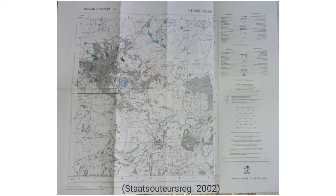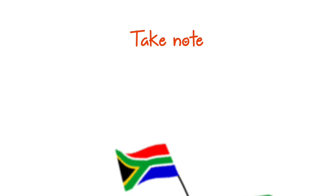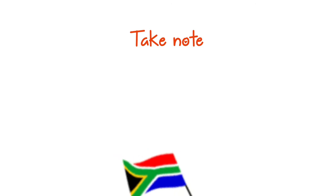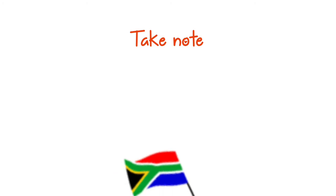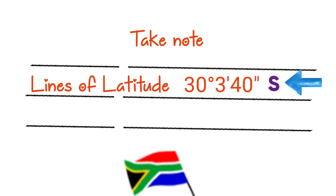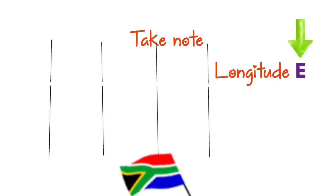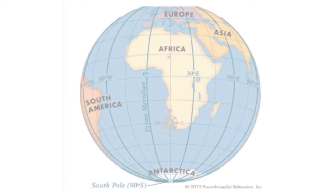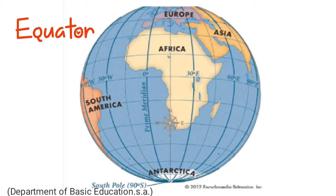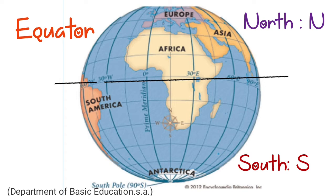Now we are looking at the map of Ladysmith to determine the coordinates for a certain feature. Please take note: in South Africa, when you are given a map as a learner, your latitude will always be south and your longitude will always be east. Now why is that so? Let's locate our equator. The equator is your zero degree imaginary line of latitude dividing the earth north and south.